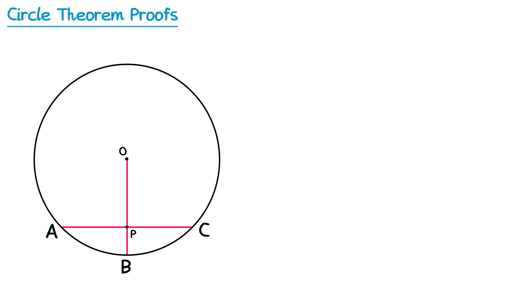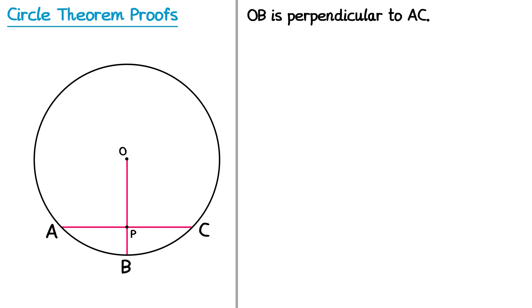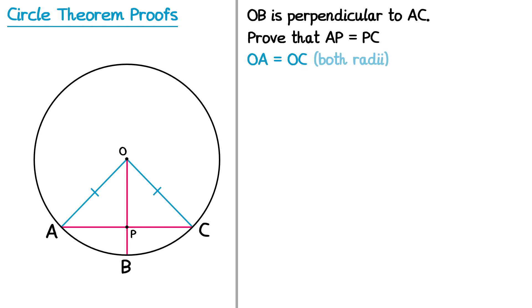Now onto the final proof: the radius bisects a chord at 90 degrees. If you do AQA maths, you don't need to know this proof — it isn't mentioned in their teaching guidance. But if you do Edexcel, stick around because it is explicitly required. The proof might say OB is perpendicular to AC; prove that AP equals PC. We start by drawing radii from O to A and O to C, and since they're radii they're both equal in length: OA equals OC.